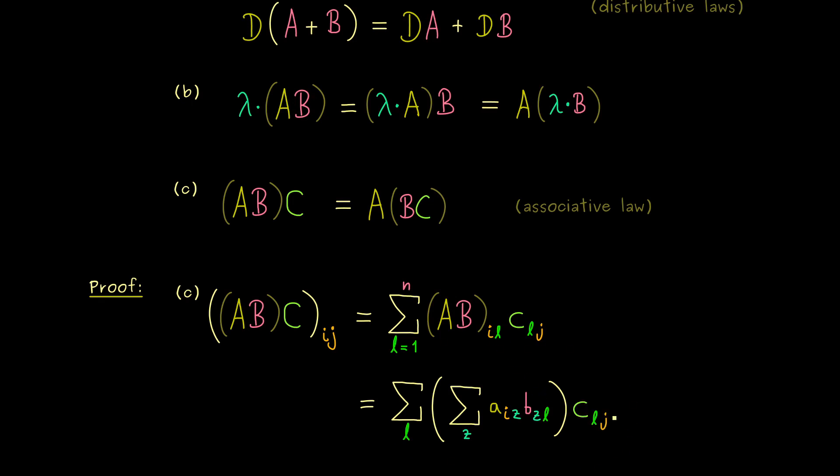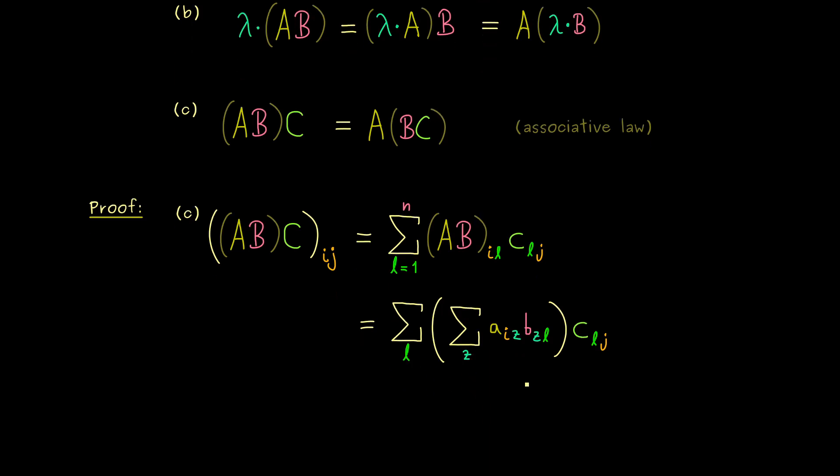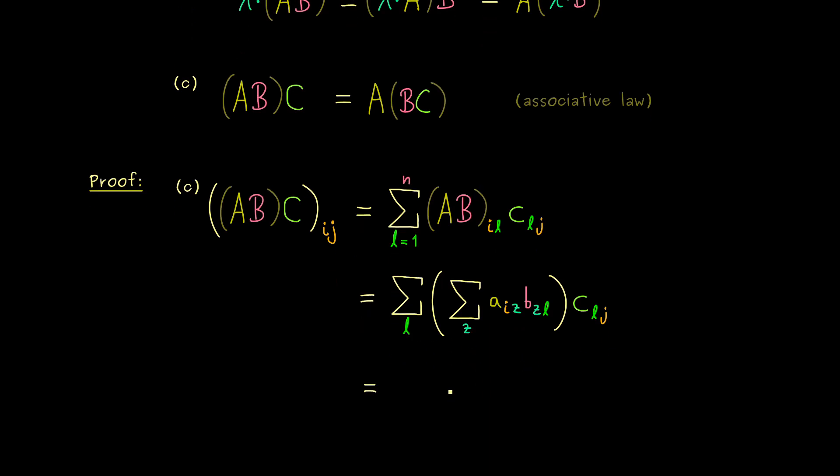Hence, we see, all that remains here is just sums and products of real numbers. And there we know, by the distributive laws, we can rearrange that a lot. So for example, it's allowed to change the order of the sum symbols.